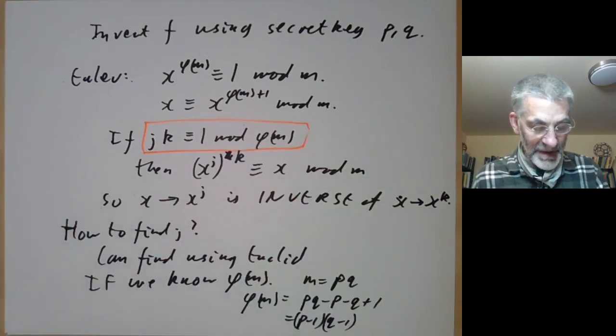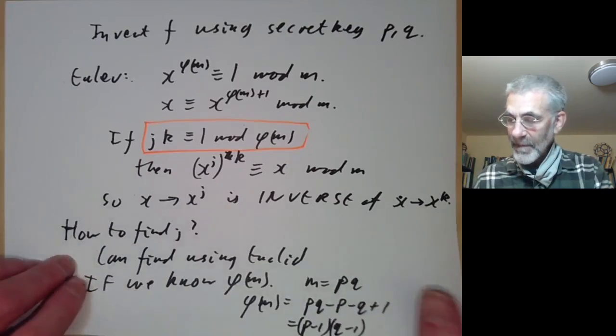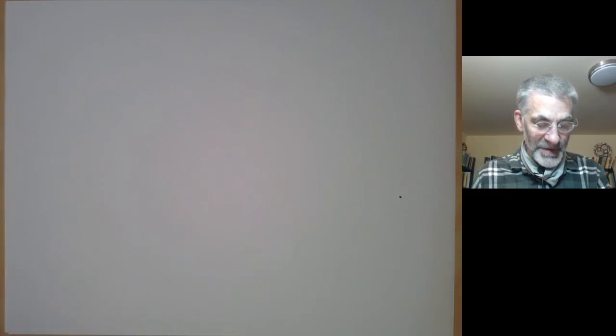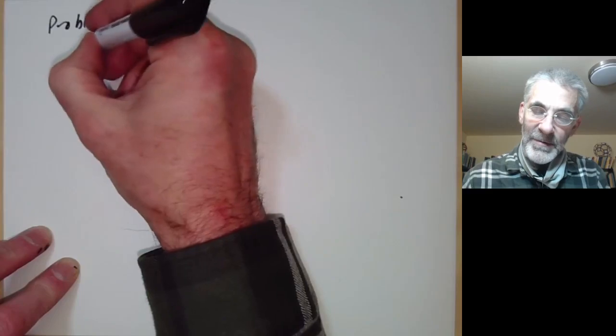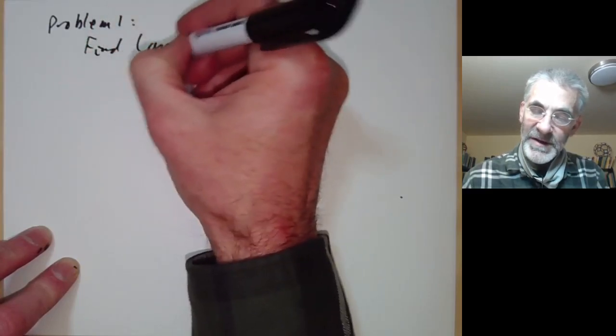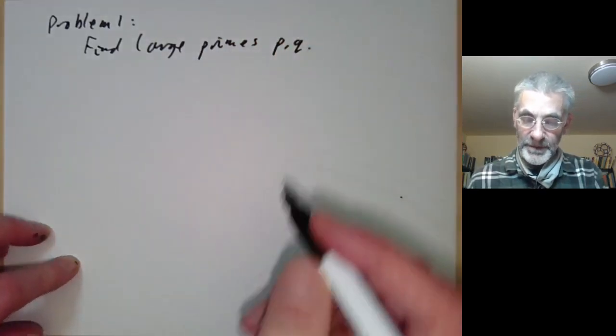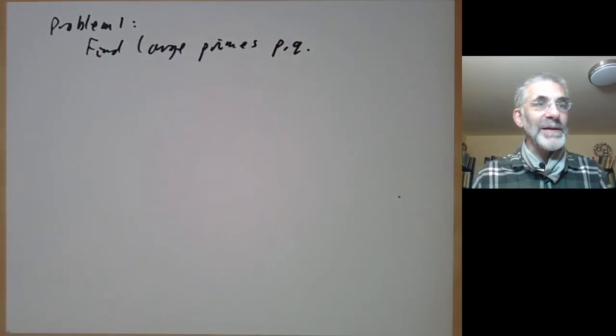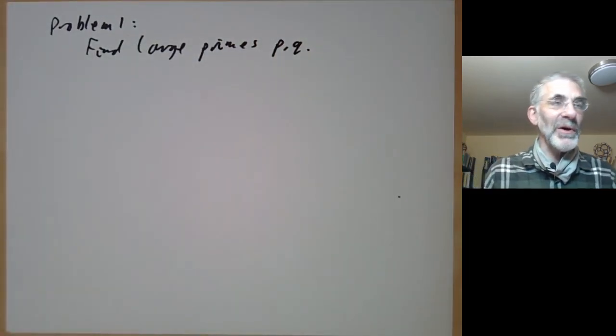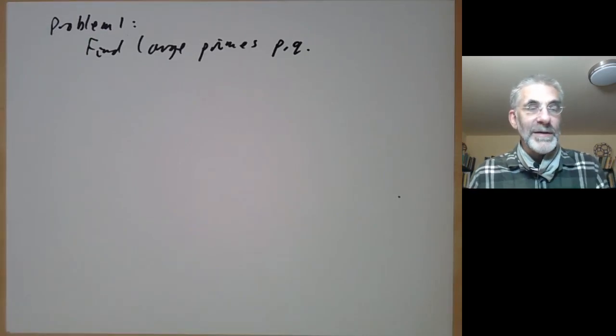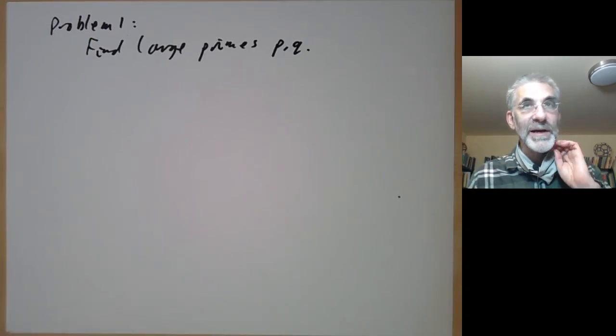Let's discuss a few problems with this. Problem one: how do we find large primes p and q? Remember these have hundreds of digits—you can't really test whether they're prime by testing all their factors. This would just take too long.